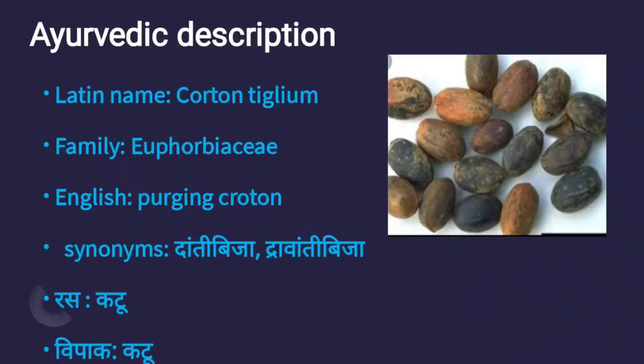Ayurvedic description: Latin name — Croton Tiglum. Family — Euphorbiaceae. English name — Purging Croton. Synonyms include Danti Bija, Dravanti Bija, and Rasaka to Vipaka Ketu.